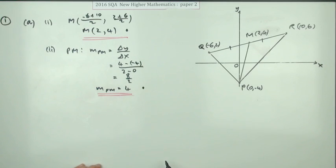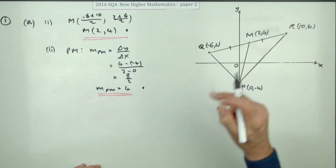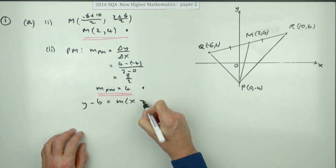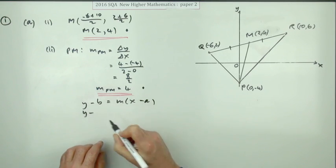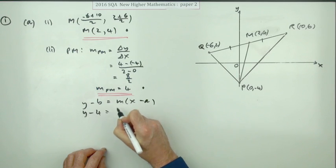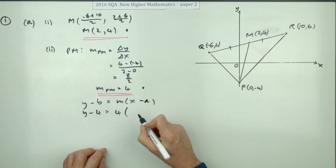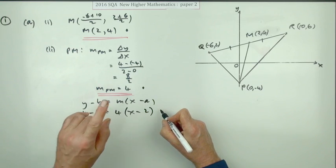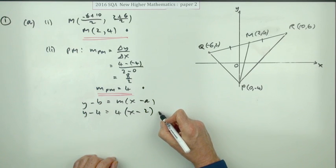Now the line itself though, you can use either of those points. If you chose the top point, you'd have to go in with Y minus B equals MX minus A. Y minus the Y coordinate, which is four, gradient four, X minus the X coordinate, which is two. And if you did that, this year, you'd get a mark there, the third mark. But not in future.